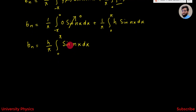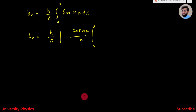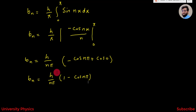We know the integral of sin(nx) is -cos(nx)/n. So bN = (h/π) · [-cos(nx)/n] from 0 to π = (h/nπ) · (-cos(nπ) + cos(0)). Since cos(0) = 1, we get bN = (h/nπ) · (1 - cos(nπ)). This is the value of bN.